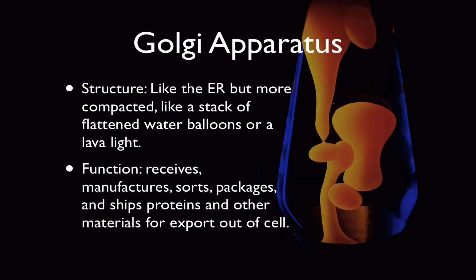The Golgi apparatus looks a lot like the ER, except it's a little more compact. It looks like a stack of flattened pancakes or flattened water balloons, and it operates kind of like the way things move inside a lava lamp — the oozing and shifting of shape and the production of sacks. It functions like a warehouse: receiving materials, manufacturing materials, sorting them, packaging them, and finally shipping them — especially proteins — to other places in the cell, or even out of the cell by way of exocytosis.